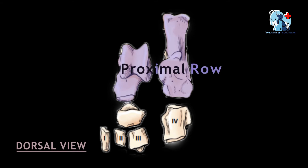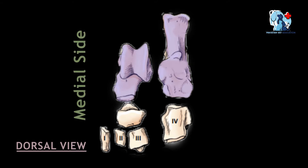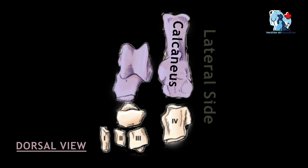The first is the proximal row. The proximal row contains two bones: medially the talus bone is present, while laterally this row contains the calcaneus bone.